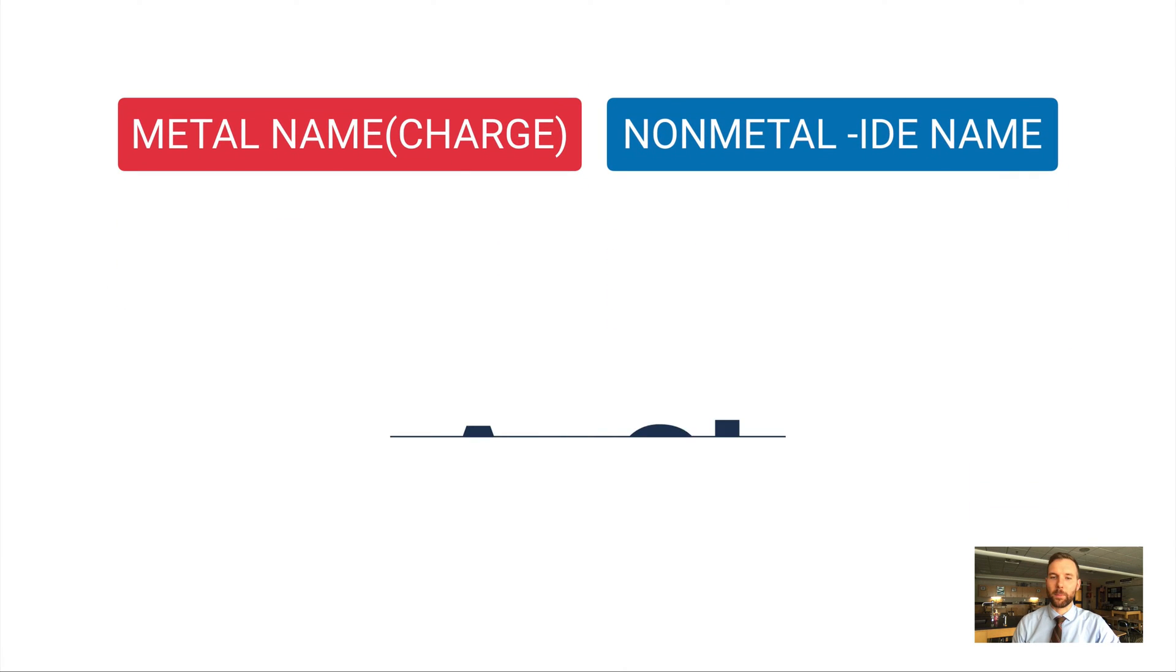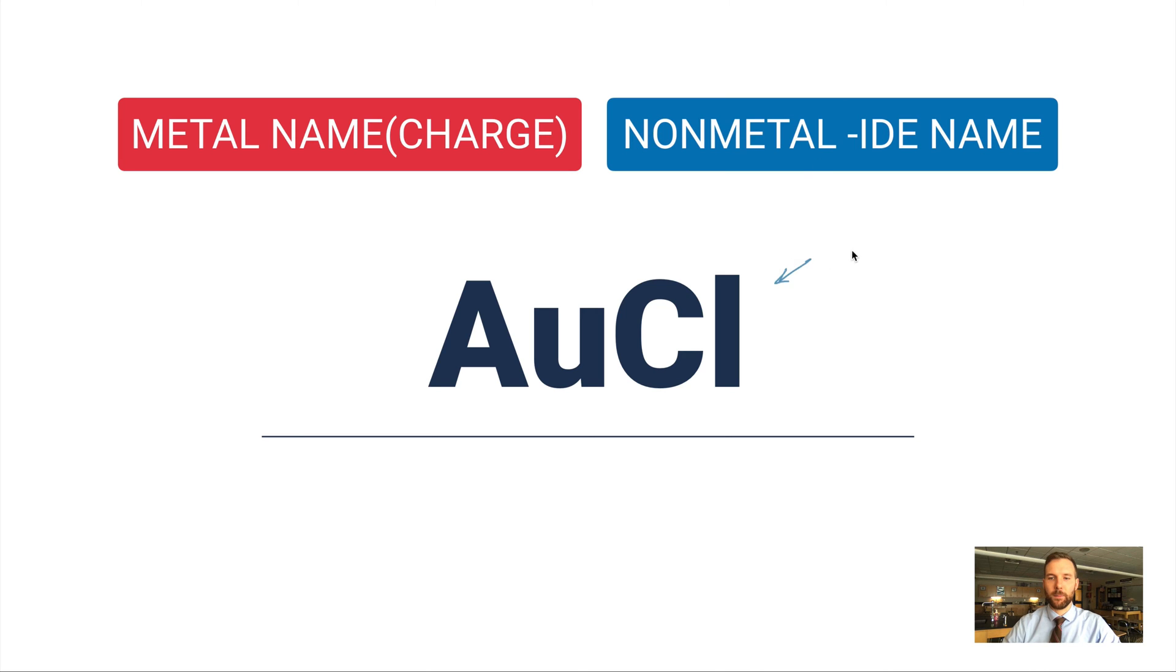Let's do some examples. If I gave you AuCl, you'd have to go to the periodic table, find Cl—Cl is in group 17, so that means this one gets a negative one charge always. Our goal is to figure out what's the charge on Au.